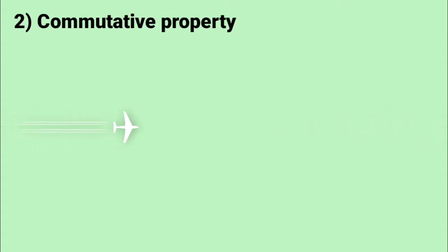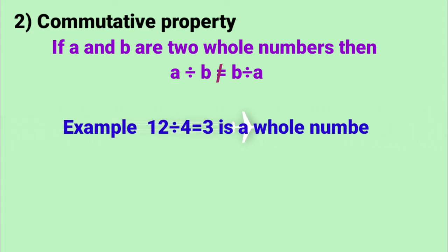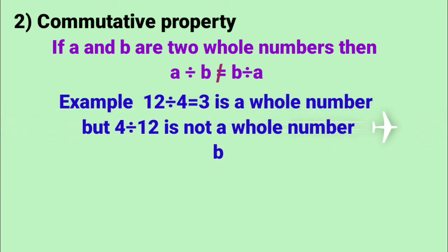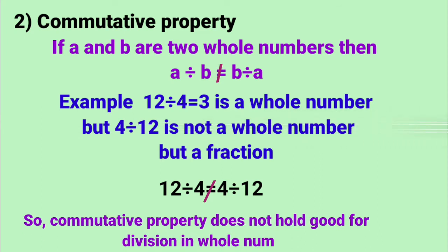Let's see the second property: Commutative property. If A and B are any two whole numbers, then A divided by B is not equal to B divided by A. Let's see one example here. 12 divided by 4 result is 3 which is a whole number, but 4 divided by 12 is not a whole number but we will get a fraction. So 12 divided by 4 is not equal to 4 divided by 12. That means commutative property does not hold good for division in whole numbers.